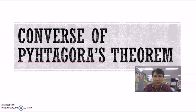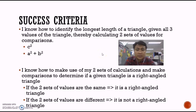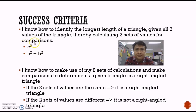So in the Converse of Pythagoras' Theorem, we want to decide whether or not a triangle is a right angle triangle. That's the important thing about the Converse. So let's take a look at some of the success criteria. First of all, we need to be able to identify the longest length of the triangle given all three values. And once we have managed to identify that, we can make two separate sets of calculations: one for c squared, and the second for the sum of squares of the two shorter lengths.